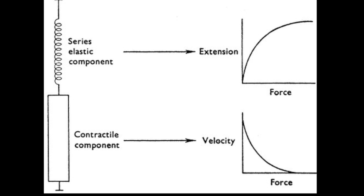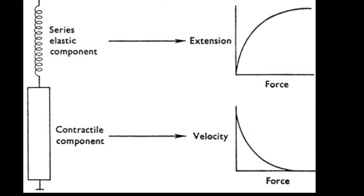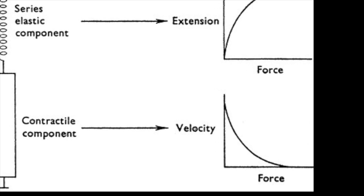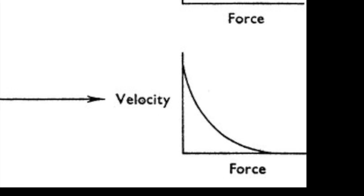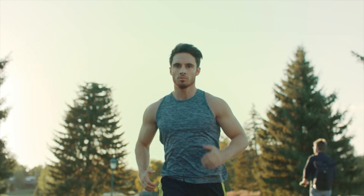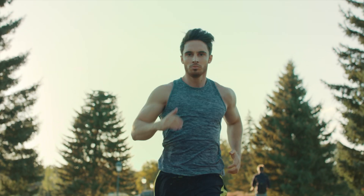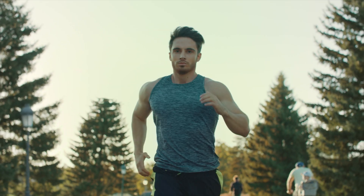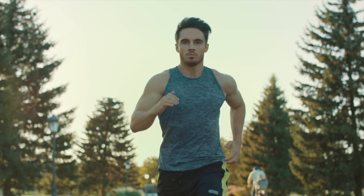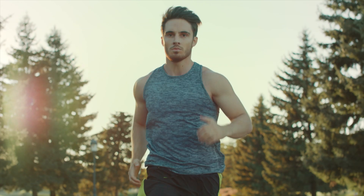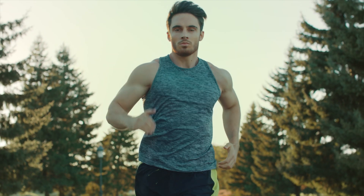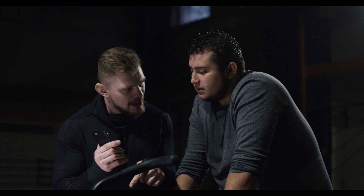Hill also studied the force velocity curves in muscles, and in 1938 developed an equation that allowed scientists to distinguish and identify slow twitch and fast twitch muscles, and to develop force power curves, and determine peak power. This curve described by Hill over 80 years ago is still central to human muscle mechanics, and is used by fitness trainers and kinesiologists in developing exercise protocols and prescriptions for athletes.